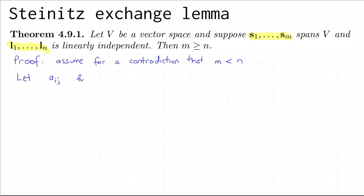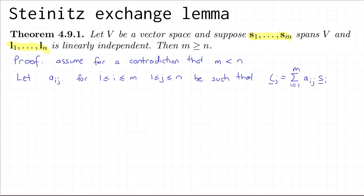Let a_ij, for 1 ≤ i ≤ m and 1 ≤ j ≤ n, be such that l_j equals the sum from i=1 up to m of a_ij times s_i. I know that such scalars must exist because s_1 up to s_m are a spanning sequence, so I can write every vector in V as a linear combination of s_1 up to s_m.